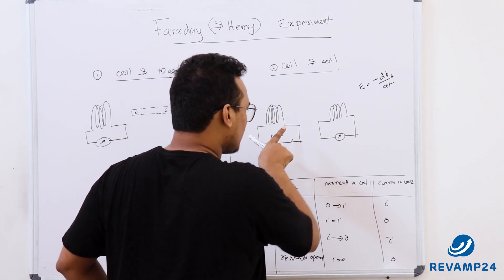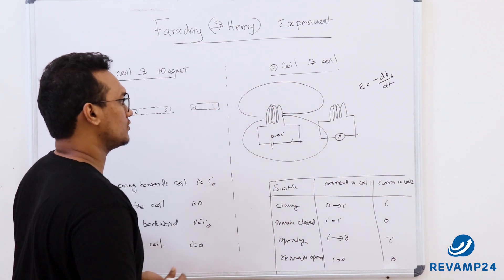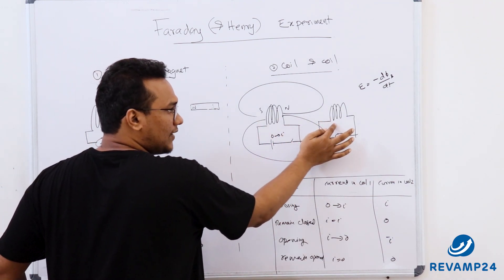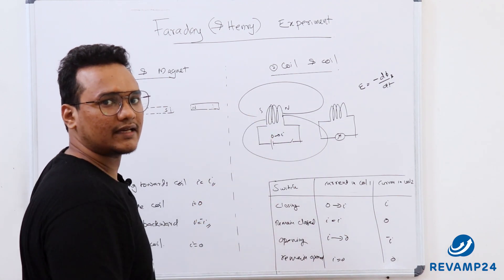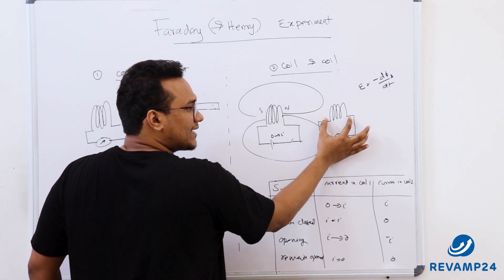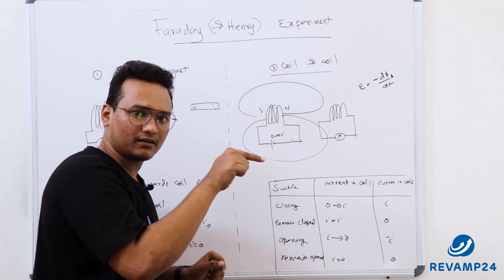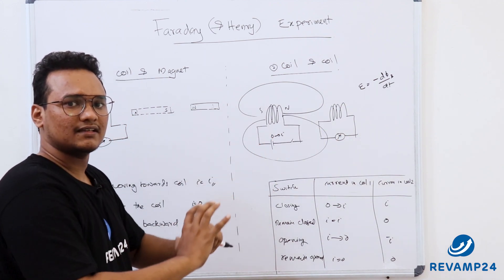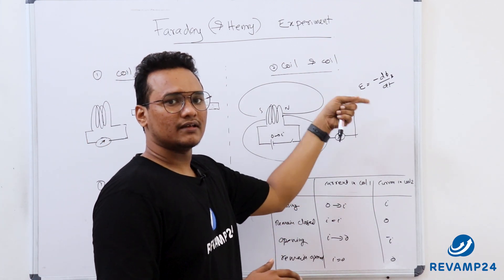In the second experiment, when the switch is open there is magnetic flux starting from north and terminating at south, but initially the flux linkage with the second coil is zero. The moment you close the switch, the magnetic field starts building up as current increases to i. As the magnetic field increases through the second coil, flux linked with it also increases — there is a change in magnetic flux, which induces an EMF. Since the circuit is closed, an induced current flows.